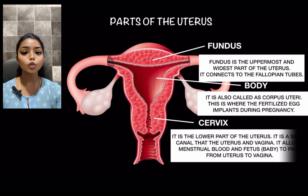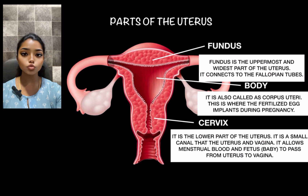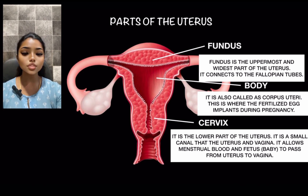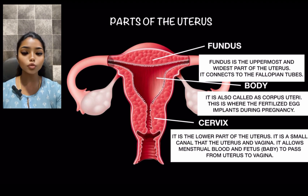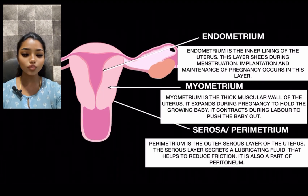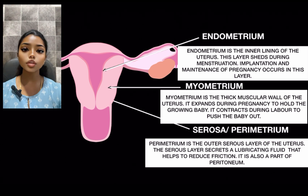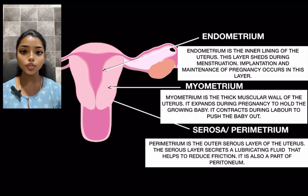The cervix is the lowest part of the uterus. It acts as a canal between the uterus and the vagina. It allows the menstrual blood and the baby to pass from the uterus into the vagina.